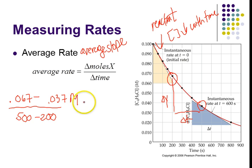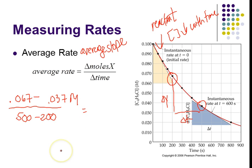If I were to actually do this math out, that would be my average rate. Sometimes, depending on what interval you use, that average rate might not reflect what's going on very well because, as you pointed out, the graph is curving. So a lot of times what we're interested in is an initial rate.